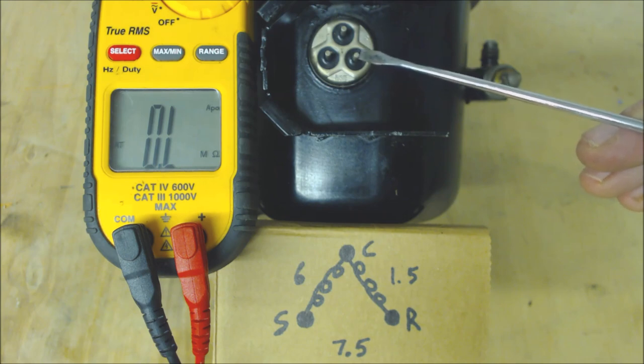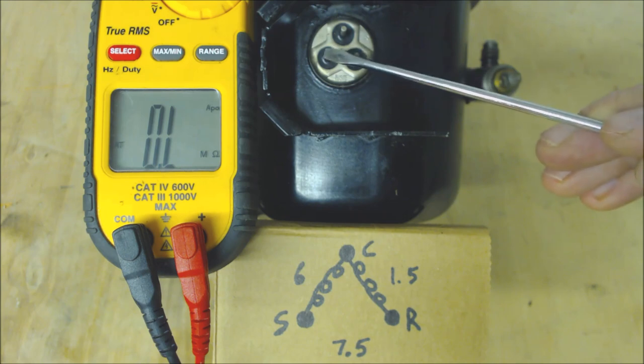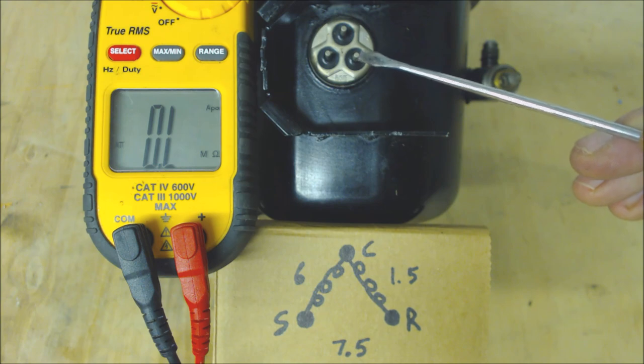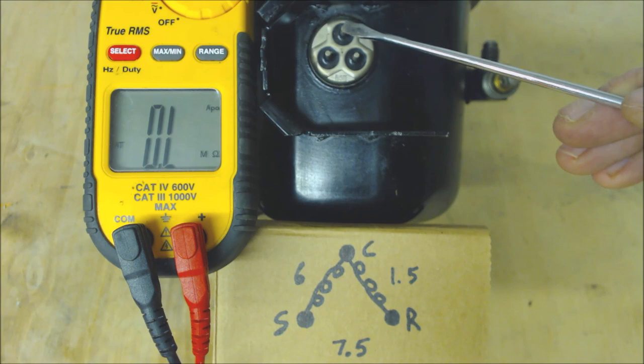Now to get the highest resistance reading that means that you actually have to go through both windings. So if this is your highest resistance reading then this right here is your common tap.